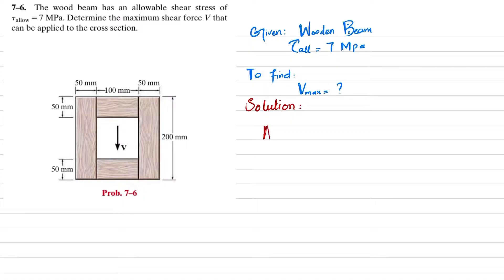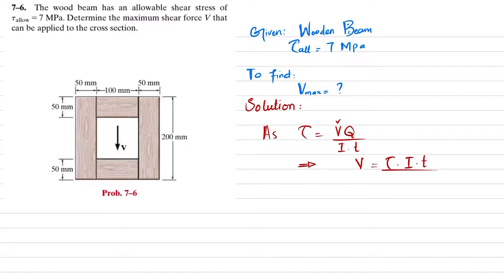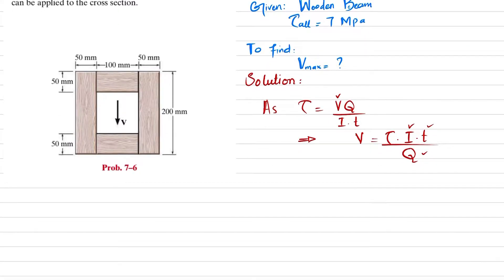As we know, shear stress is equal to V times Q divided by I times t. We are interested to find V, so from here we know that V is equal to shear stress times I times t divided by Q. We do not yet know I, t, or Q, so let's find each one.